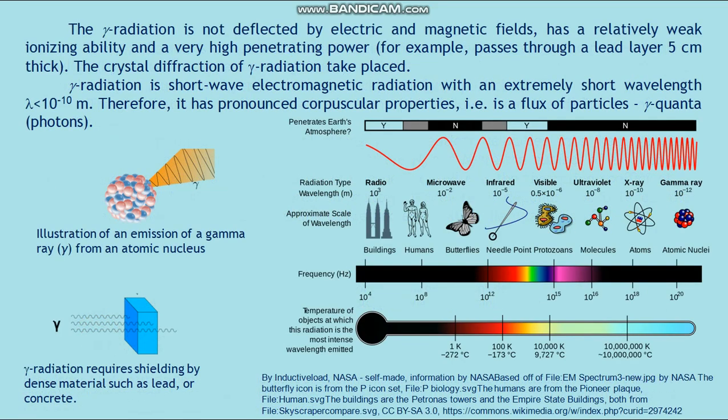The gamma radiation is not deflected by electric and magnetic fields, has a relatively weak ionizing ability, and a very high penetrating power. For example, it passes through a lead layer 5 centimeters thick. The crystal diffraction of gamma radiation takes place. Gamma radiation is short-wave electromagnetic radiation with an extremely short wavelength, and therefore it has pronounced corpuscular properties. It is a flux of particles: gamma quanta, photons.